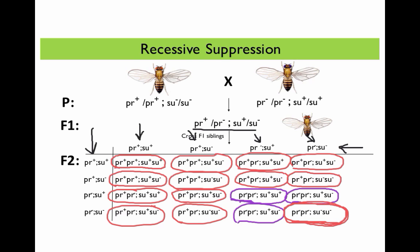So if we count up all of the red flies, we get 13 red flies, and if we count up all of the purple flies, we see 3 purple flies. And so that is how the recessive suppression gene interaction between one mutant gene and a suppressor mutation leads to a 13 to 3 ratio in the F2 from crossing two heterozygotes — because in the double homozygous mutant, being homozygous for the suppressor mutation reverses the phenotype of the other gene so that the organism displays a wild type phenotype. I hope this video was helpful in learning more about gene interactions, specifically the gene interaction of recessive suppression.